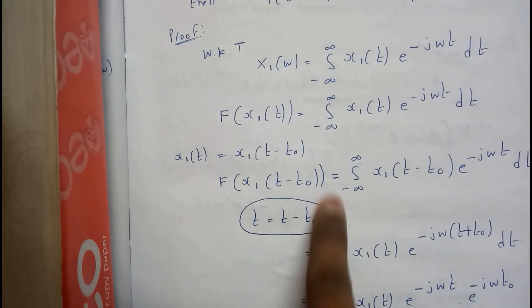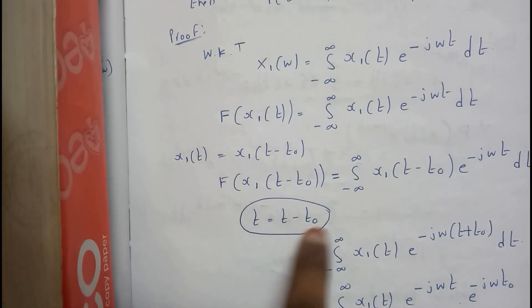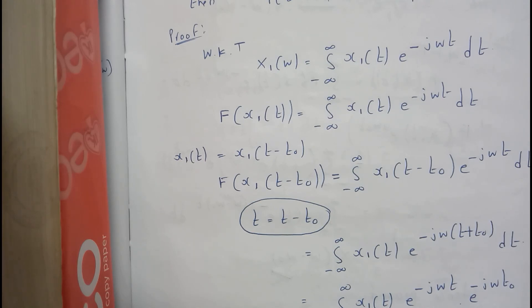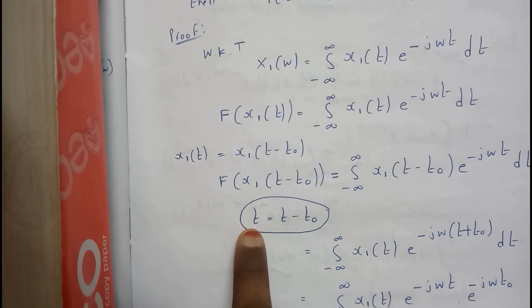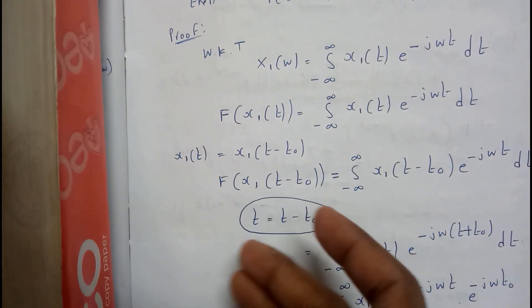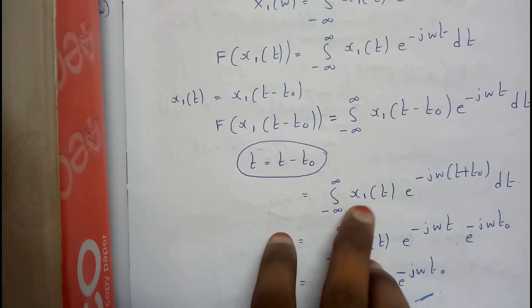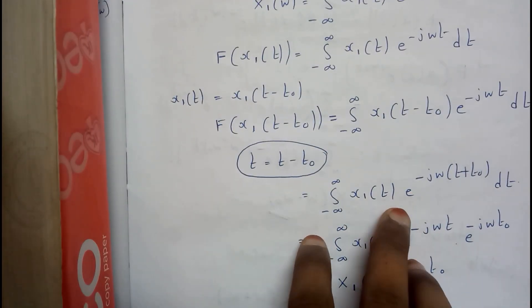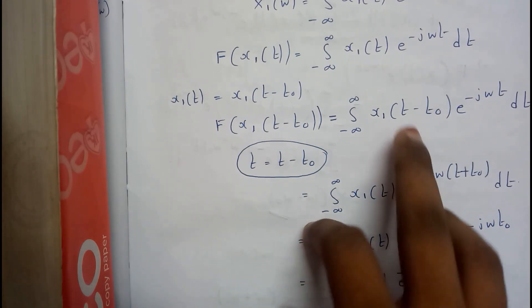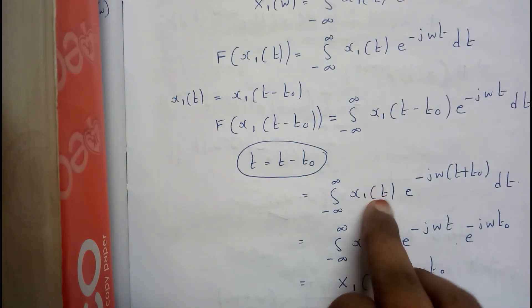So here t minus t₀ we will be assuming as another letter. Assume some other letter, guys, because it should not cause any confusion to you. It should be x or y or something else, so that it will be a bit clear for you. For my convenience, I just took another variable. So integral minus infinity to infinity x₁ of that variable times e^... So this whole becomes x, let us assume that as x.